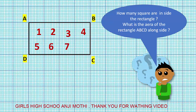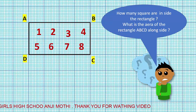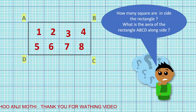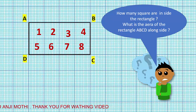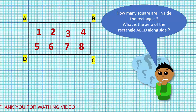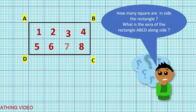...eight. There are eight squares inside the rectangle ABCD. The length of rectangle ABCD is four centimeters and the breadth is two centimeters.